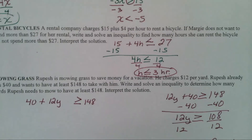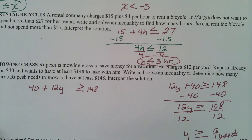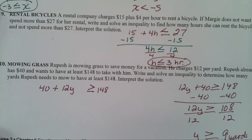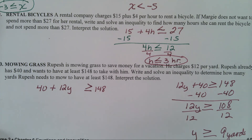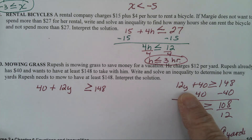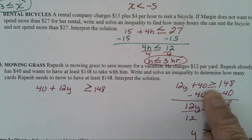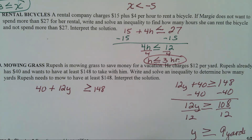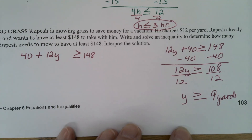Let's go to the last one on this page. This person is mowing grass to save money for a vacation. He charges $12 per yard, he already has $40, and wants to have at least $148 to take with him. Write and solve an inequality to determine how many yards he needs to mow to have at least $148. He gets $12 per yard, so 12 times y. He already has $40. 12y plus 40 is greater than or equal to $148. You subtract 40 from each side. 12y is greater than or equal to $108. Divide by 12 and he has to cut 9 or more yards. Y is greater than or equal to 9 yards.